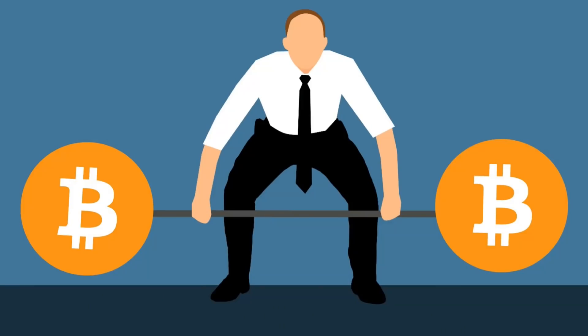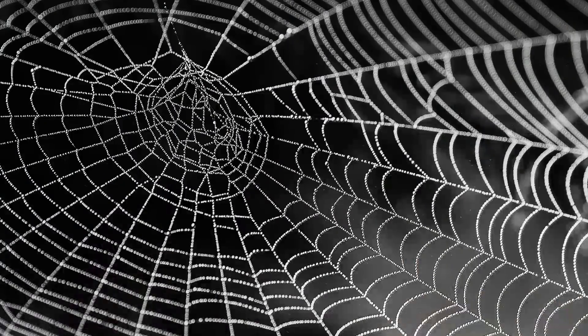The more of these blocks we tie together, the stronger the network becomes — a bit like how each strand of a spiderweb strengthens the whole. The blockchain also helps keep our records safe via a system known as cryptography for all of its transactions.